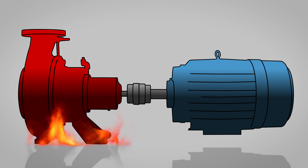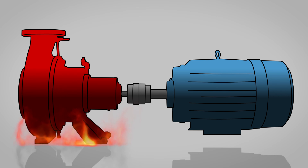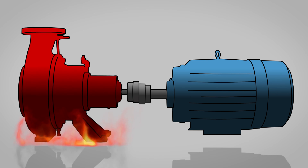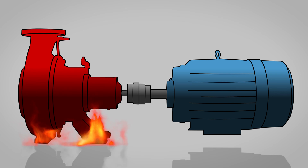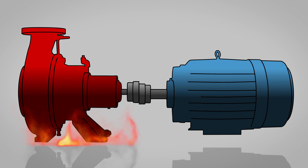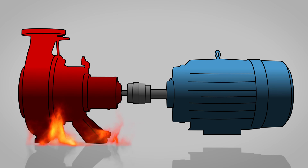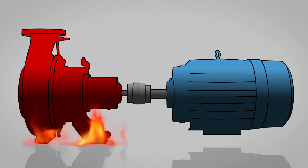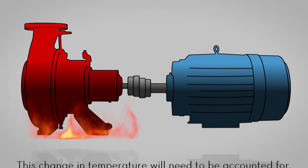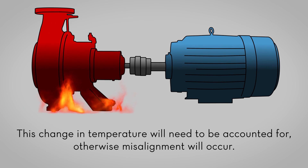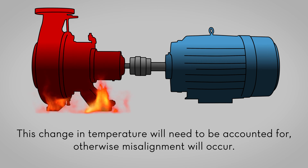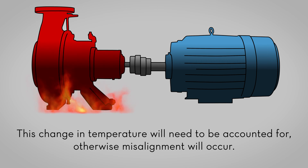It is important to note that the alignment of the machine can change from when it is offline to when it is running at its operating temperature. During the shaft alignment process, this change in temperature will need to be accounted for, otherwise misalignment will occur.